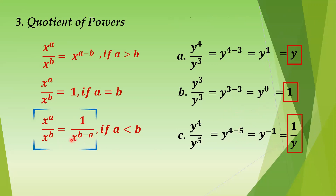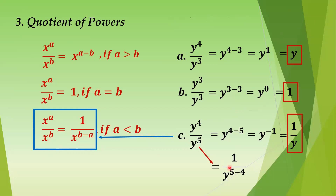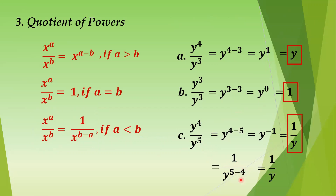Another example of simplifying a negative exponent: 3y raised to negative 2. Separate it as 3 times y raised to negative 2. Take the reciprocal of y raised to negative 2 to get 1 over y squared. So you have 3 times 1 over y squared, giving 3 over y squared. When an exponent goes to zero, the result is automatically 1; when it is negative, just simplify by taking the reciprocal.